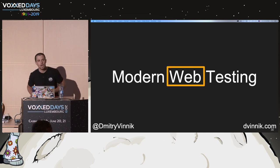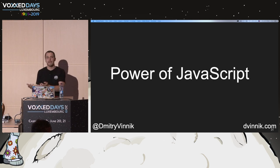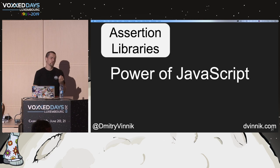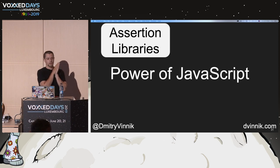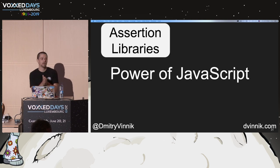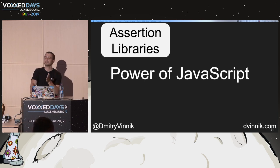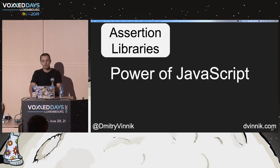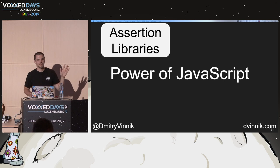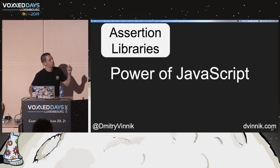Everything in web testing is supposed to be user-centric. Otherwise, you'll end up just writing end-to-end tests, thinking only they are supposed to be user-centric. No — the whole web test pyramid is supposed to be user-centric. When it comes to the modern web, JavaScript is still the language of the web, at least of the UI. Every test you write follows three simple principles: arrange the test data, act on it, and assert. Those three A's — and the tools are there for you to write it that way.